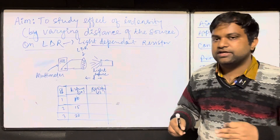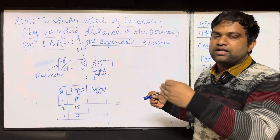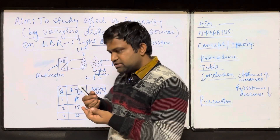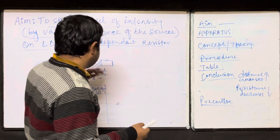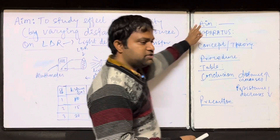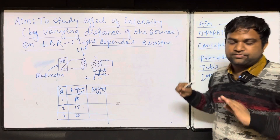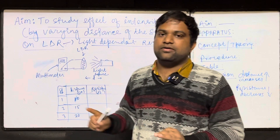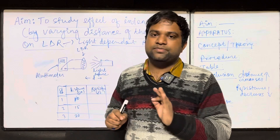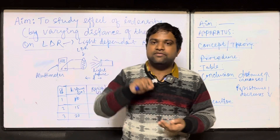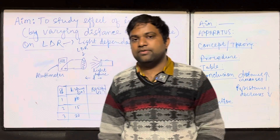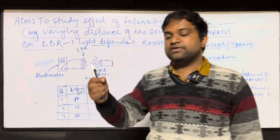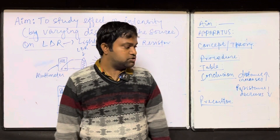Some of you are confused about how to write the activity — shall we write like a practical or experiment, or just diagrams? It is better if you draw some diagram. First, write the aim of your activity, then the apparatus — same as you do for an experiment. Mostly the calculation part is not there; only the observation part will be there. That is the difference between an activity and an experiment. One activity you have to do during your exam as well.